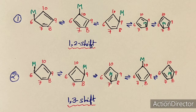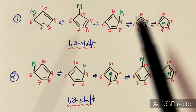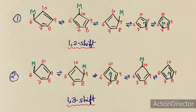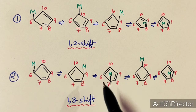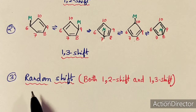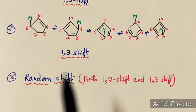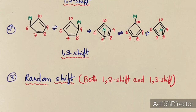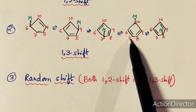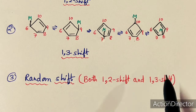There is also a third possibility called random shift, which is a combination of 1,2-shift and 1,3-shift occurring simultaneously in the cyclopentadienyl ring. At room temperature, this exchange results in two peaks: one for the η1 cyclopentadienyl ring and one for the η5 cyclopentadienyl ring.